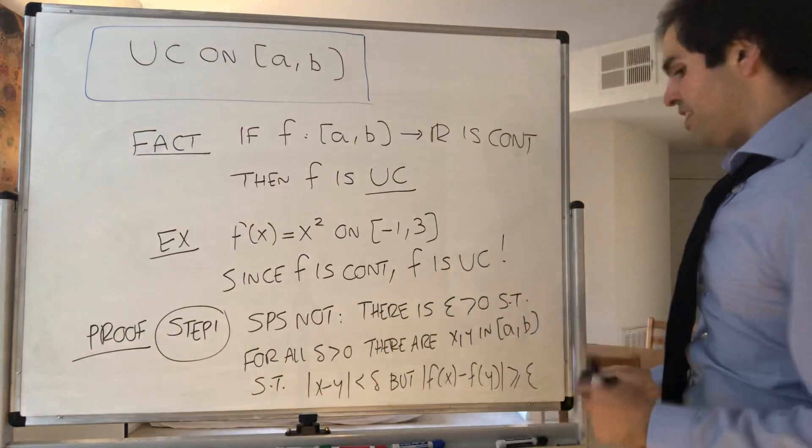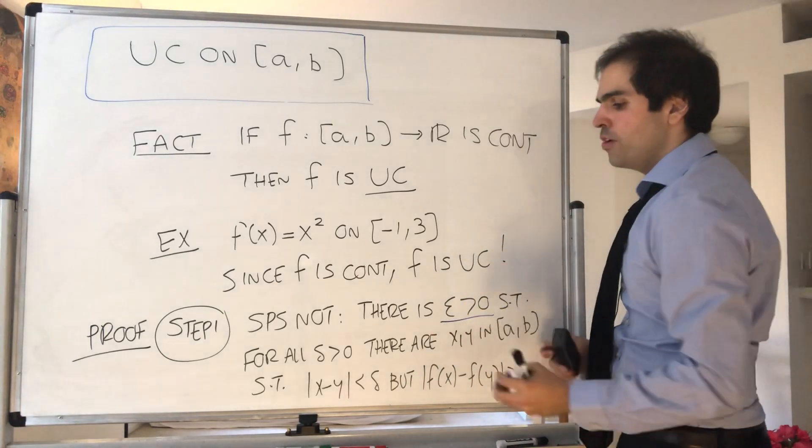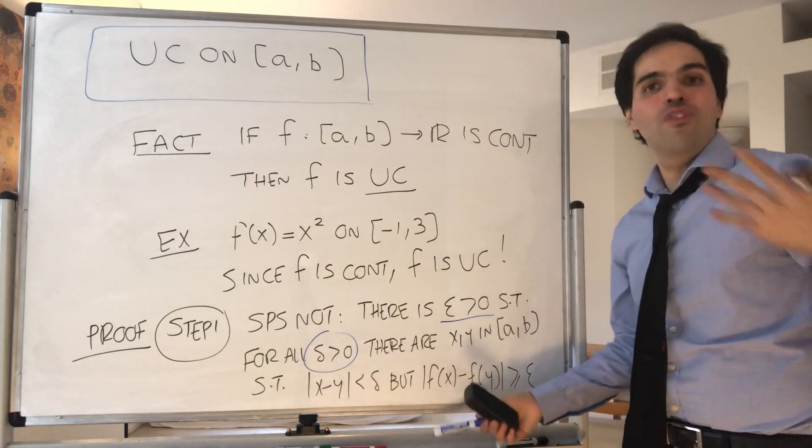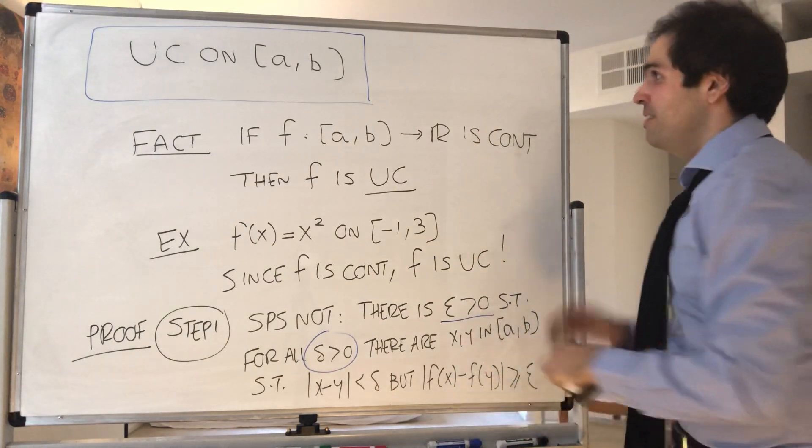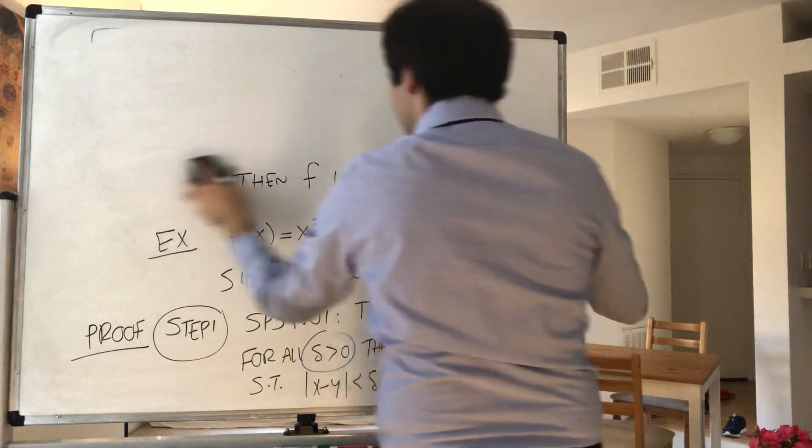And here's the thing. So again, epsilon is fixed—it's this fixed number. And the point is, as usual, since it's true for all delta, it must be true for all 1/n. So we can go from numbers to sequences.